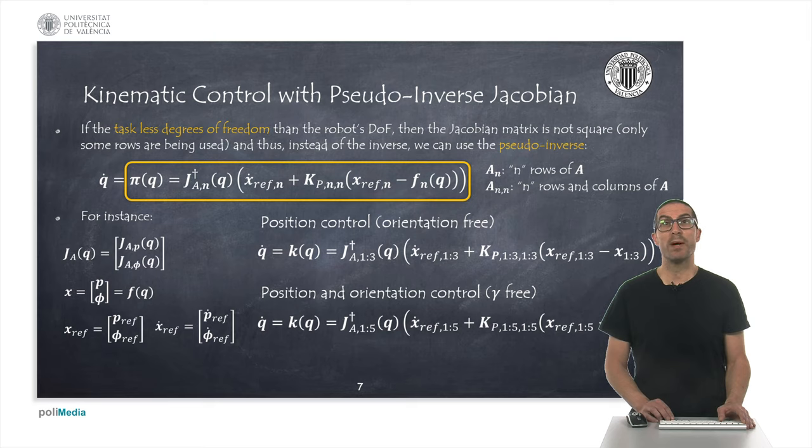These allow us, for example, to control fewer variables if we remove certain rows of the Jacobian matrix from the reference vectors, from the end effector vector, etc. Ultimately, this is what determines the task to be performed by the robot. In fact, the pseudo-inverse provides the least square solution of the smallest possible norm of q dot.